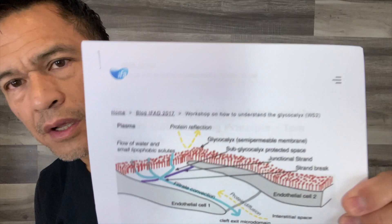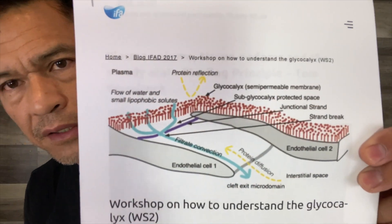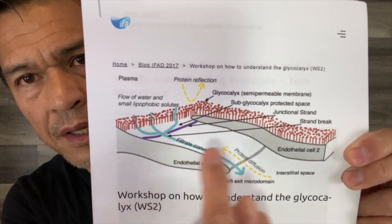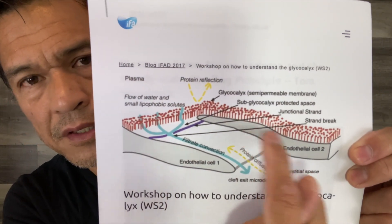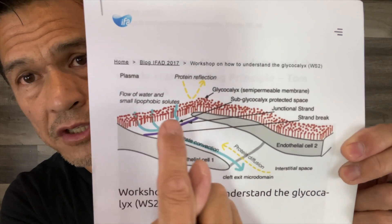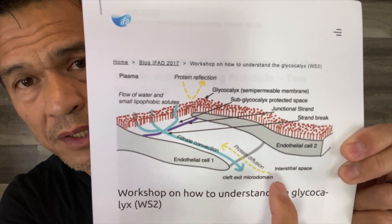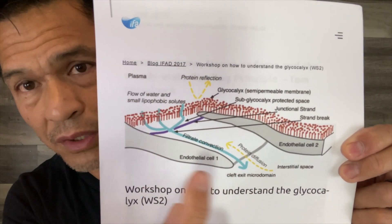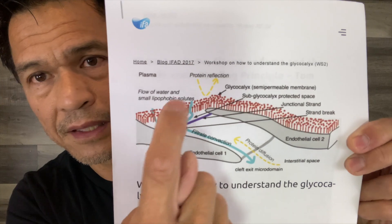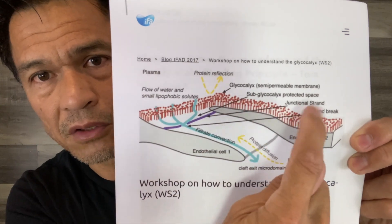This is a picture of the glycocalyx. So this is one cell, this is another cell — a blood vessel — and this is the space between the cells. This is really like an illustrated electron microscopy, and that there is the glycocalyx.